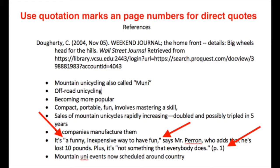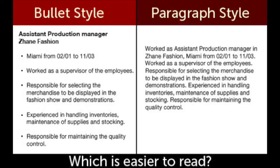An annotated bibliography is a bibliography that has notes under each reference. The bullet note annotated bibliography I have shown you is not a true annotated bibliography. A true annotated bibliography contains a paragraph summary of the article rather than bullet notes. However, I prefer bullet notes rather than paragraphs when writing papers, because bullet notes are easier to read, they help me organize my paper, and they save time when I start writing.